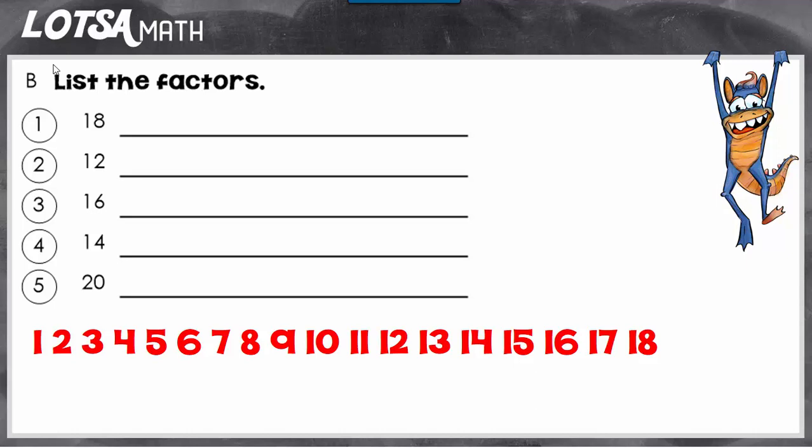So for the Factor Meetup strategy, we start with number 1 and we ask ourselves, can 1 be multiplied by something to make 18? If the answer is yes, you circle it. And then you ask yourself, which of these numbers could I multiply by 1 to get 18? And the answer is 18.